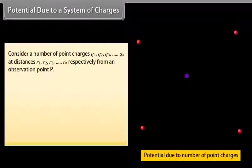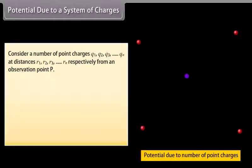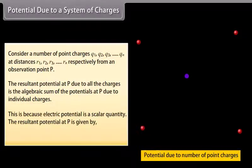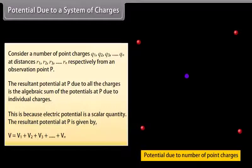Potential due to a system of charges: Consider point charges Q1, Q2, Q3, and so on up to Qn at distances R1, R2, R3 up to Rn respectively from a point of observation P. The resultant potential at P due to all the charges is the algebraic sum of the potentials due to individual charges, because electric potential is a scalar quantity. The resultant potential is given by V equals V1 plus V2 plus V3 and so on up to Vn.